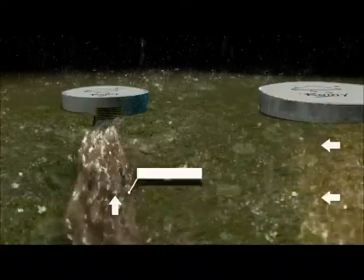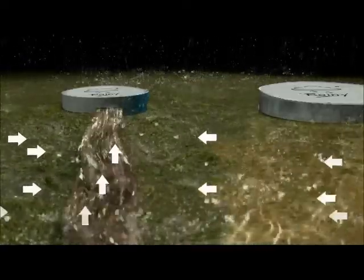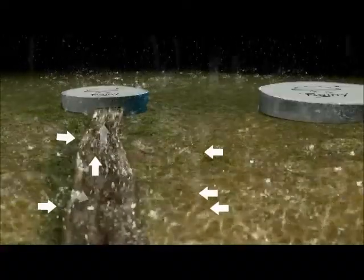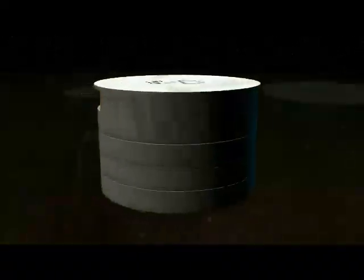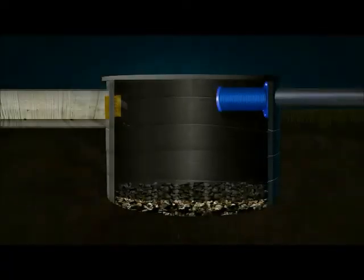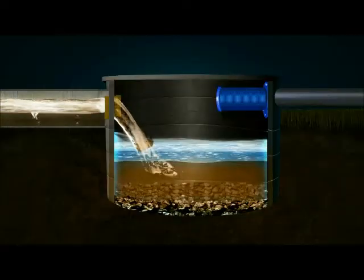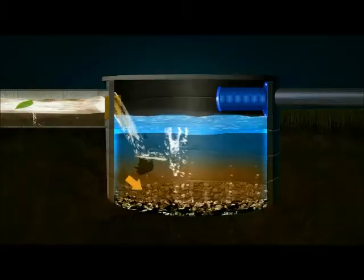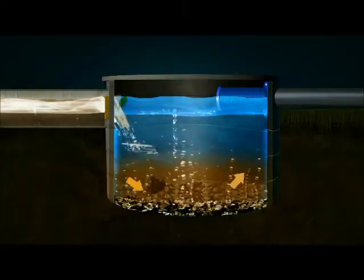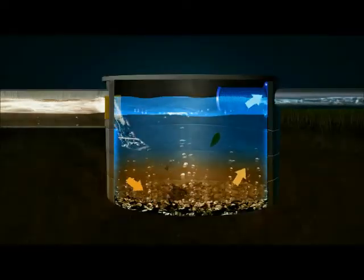The surface runoff is diverted through a water channel to a silt trap. Majority of the silt, leaves, dust and debris settles in the silt trap.